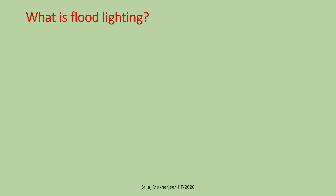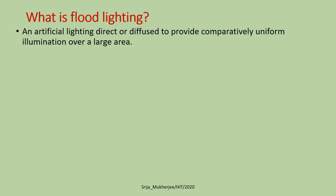What is flood lighting? Flood lighting is an artificial lighting, directed or diffused, used to provide comparatively uniform illumination over a large area.